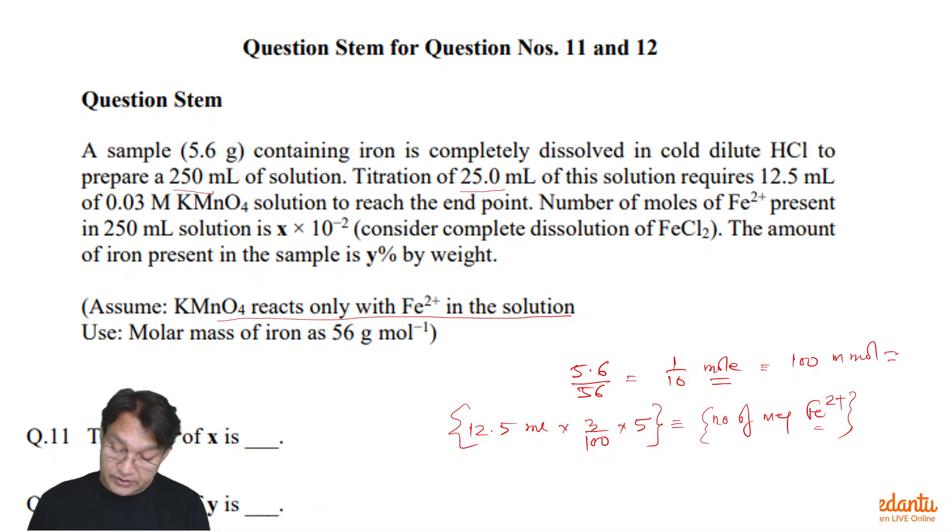This is coming out to be 12.5 into 3 into 5. So when you calculate this and you multiply this by 10, you will get the number of milliequivalents of Fe2+. So this is 12.5 into 3 into 5 upon 100 into 10. This is cancelled. So this is 1.25 into 3 into 5.